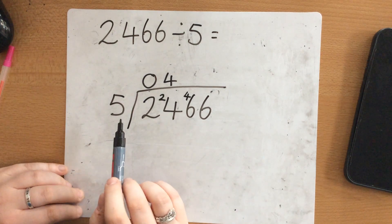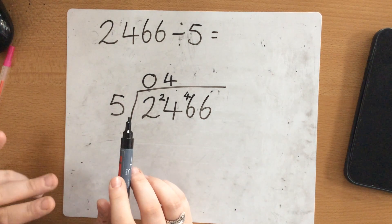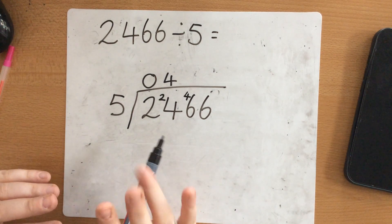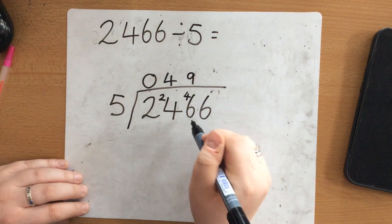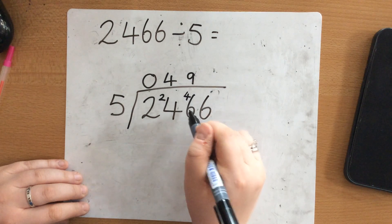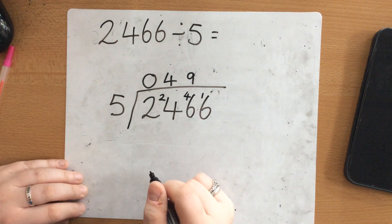Now how many 5's go into 46? So 5, 10, 15, 20, 25, 30, 35, 40, 45. That was 9 times and I could get to 45. So I was trying to get to 46. So that's 1 left over.